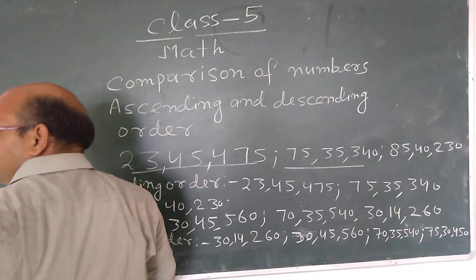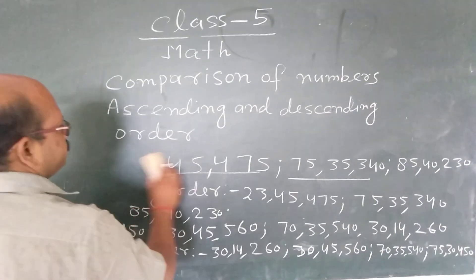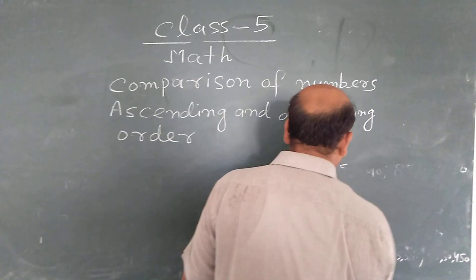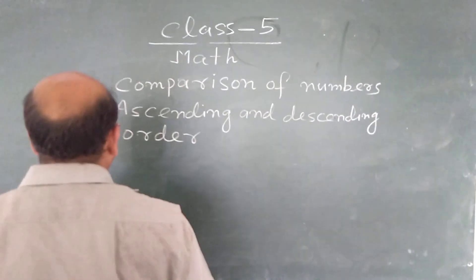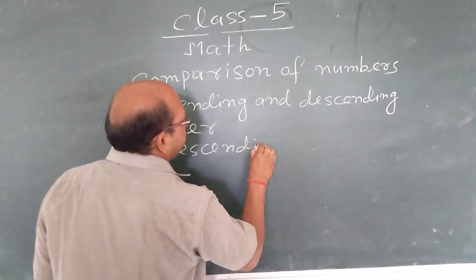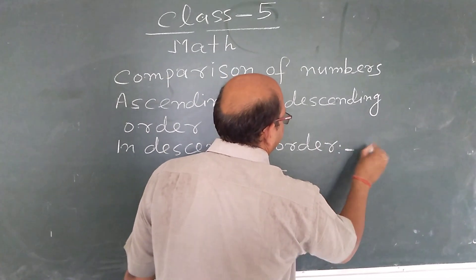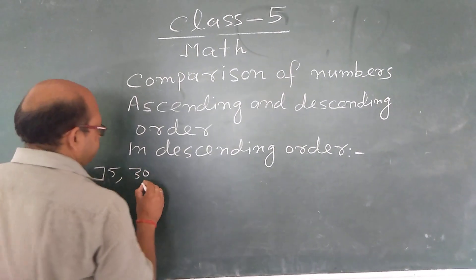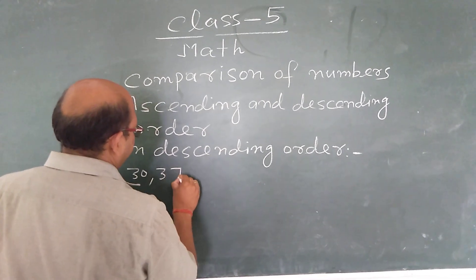Now we learn about descending order. In descending order, first we write the greatest number, then smaller numbers, and then we write the smallest number last.